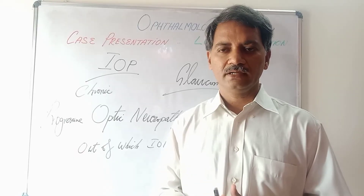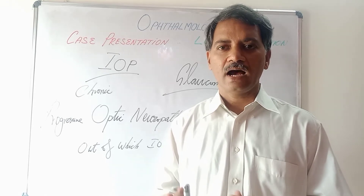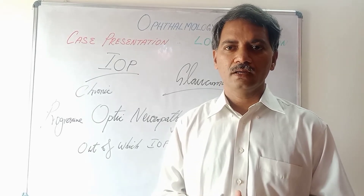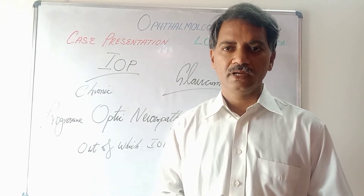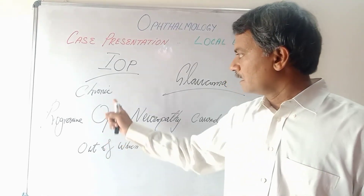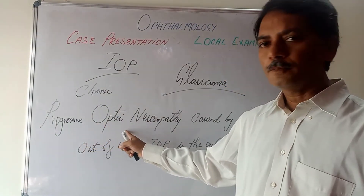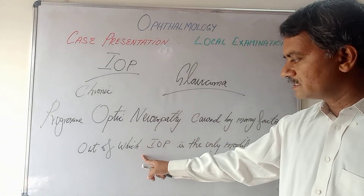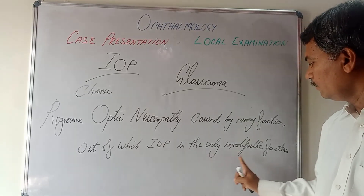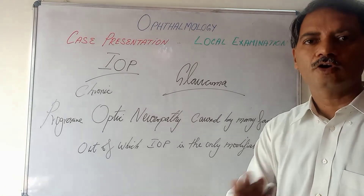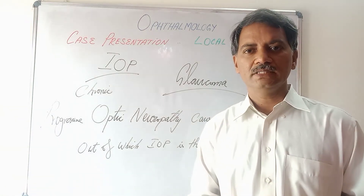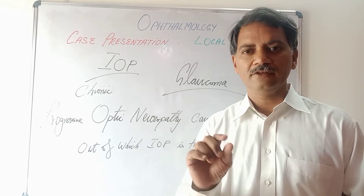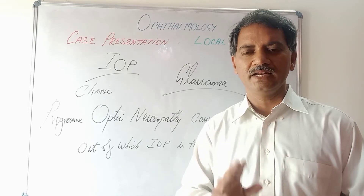Many people think intraocular pressure is another name for glaucoma, but that is not correct. Glaucoma is not simply high intraocular pressure. Glaucoma is defined as a chronic progressive optic neuropathy caused by many factors, of which intraocular pressure is the only modifiable factor. It is a disease of the optic nerve, and the only factor that can be reduced or corrected is the intraocular pressure.